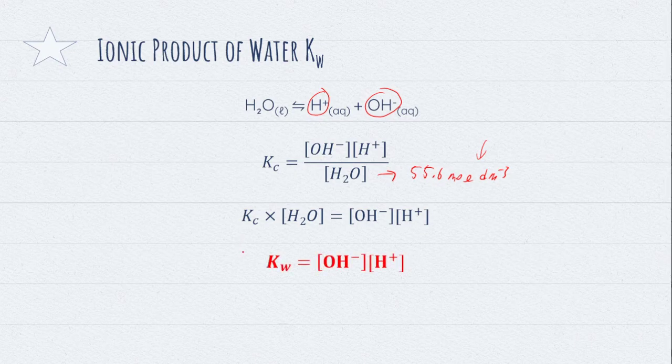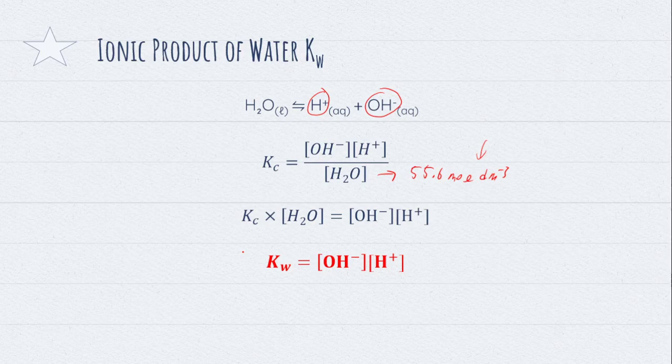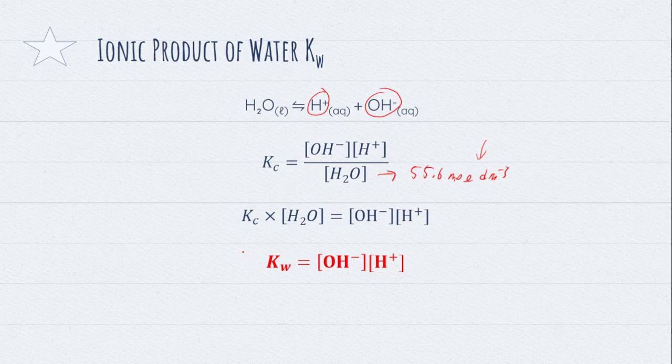And this equation is the ionic product of water, where we have the product between the two ions, hydroxide ion and the hydrogen ion.